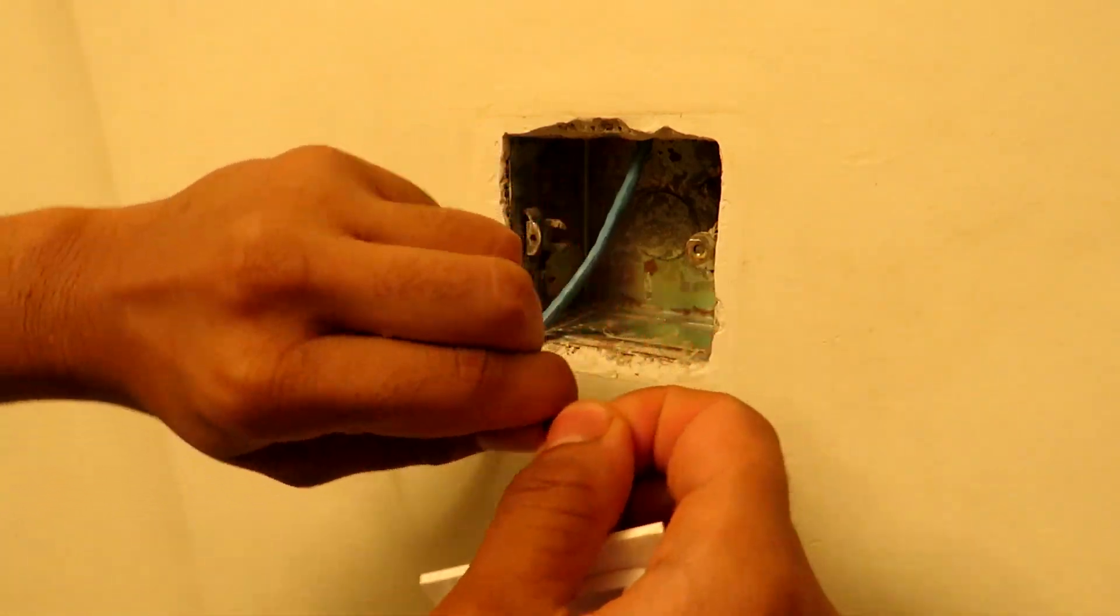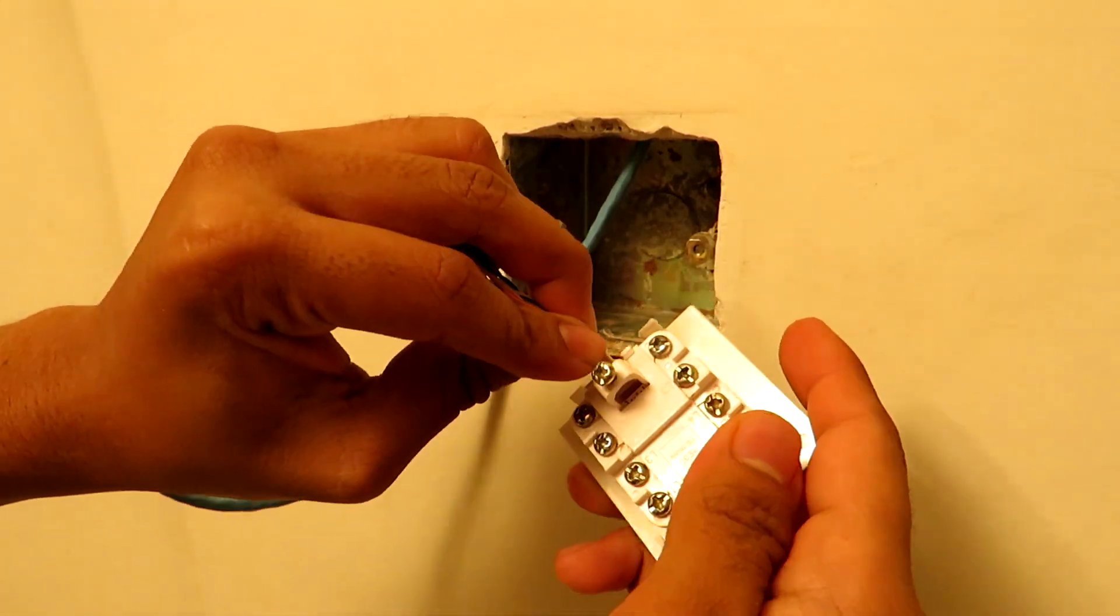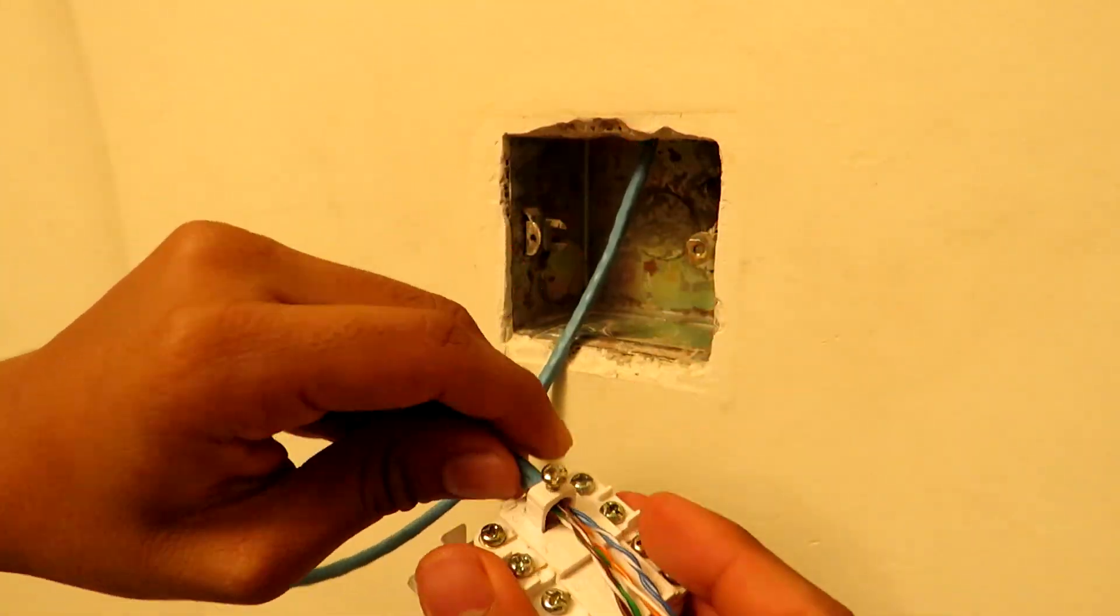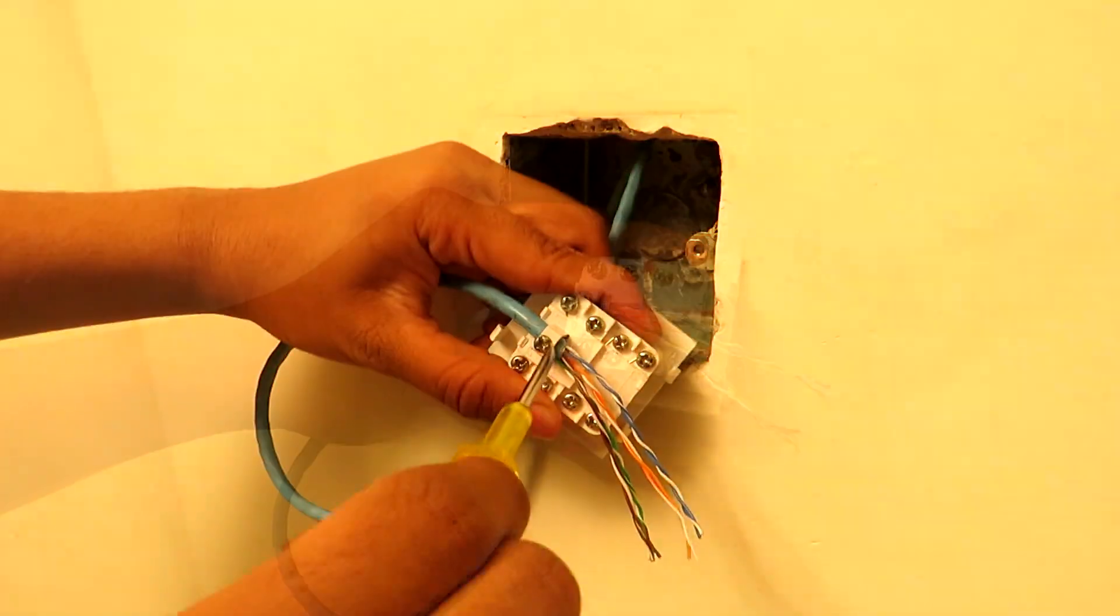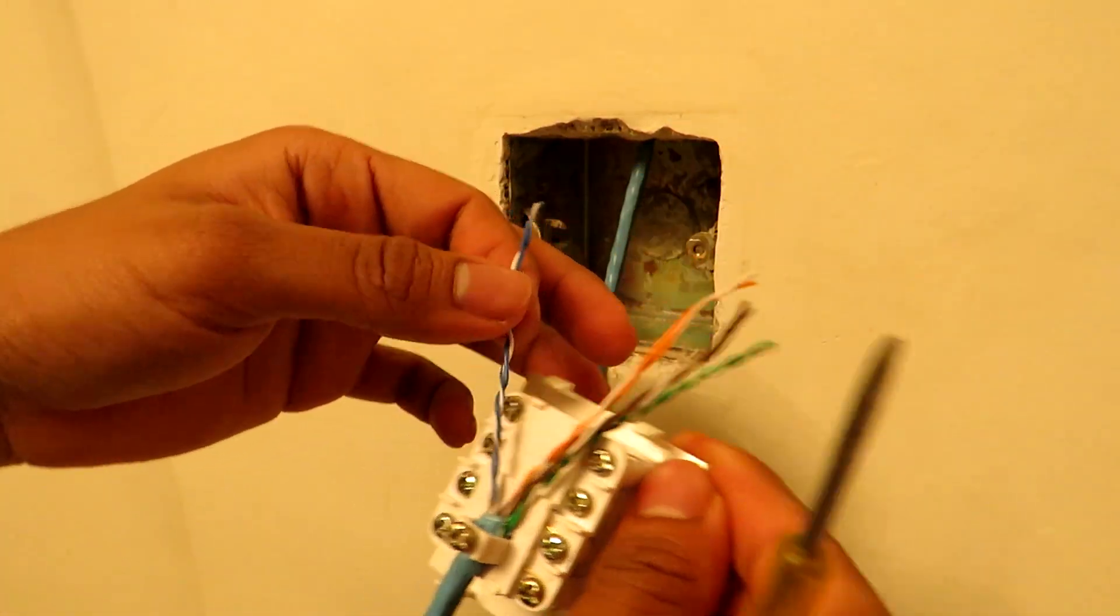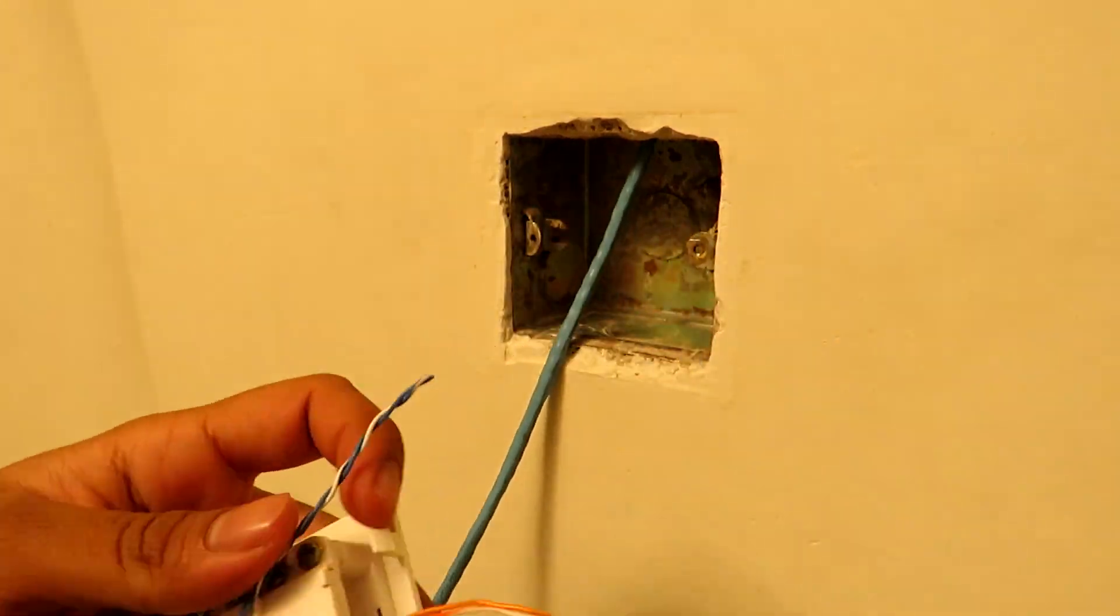T568A type of wiring pattern is used for scenarios where they need backward compatibility with one pair and two pair universal service ordering code wiring schemes which we don't have to break our head about. We will blindly go with T568B type.